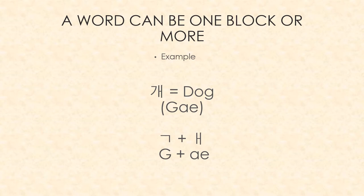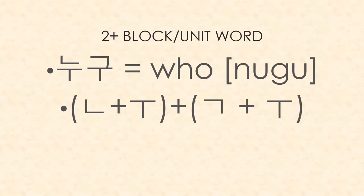A Korean word can have one block or more. For instance, the word for dog is '가' — G plus the A sound combined makes 'ga,' meaning dog. That is one block. Here's another example of a two-block word: you start with N, then U, then G, then U, making 'nugu,' which means 'who.' There can also be more than two — three, four, five maybe.